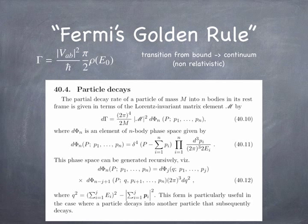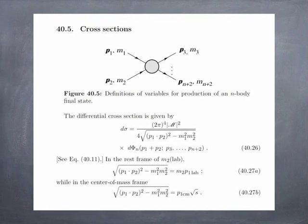The key point is that the only thing not prescribed by the momentum of the outgoing particles is the script M. Script M is what we need to calculate with quantum mechanics. Everything else on that page is dictated by Lorentz invariance and the requirement that energy and momentum be conserved. They have a similar page for cross-sections in the same sense — there are kinematic constraints from relativistic invariance, and then there's this script M, the quantum mechanical amplitude to go from incoming to outgoing particles. That's really what I want to focus on today.